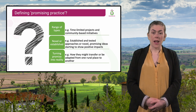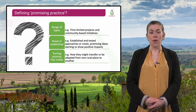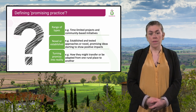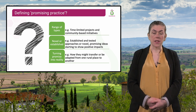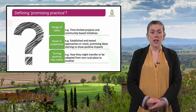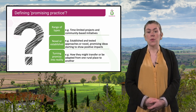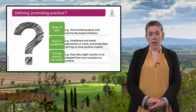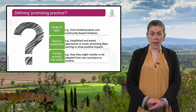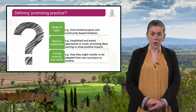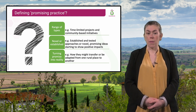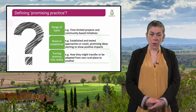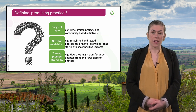Promising practices can include a range of practices from, for example, time-limited projects and community-based initiatives to specific policies and new organisational models. They don't have to be long-established and deeply tested approaches — they can be novel ideas that look promising and are starting to show positive impacts in rural areas.